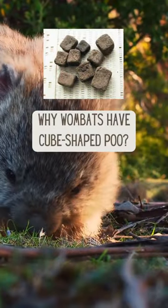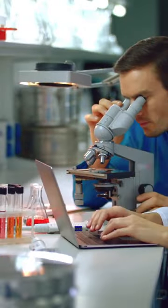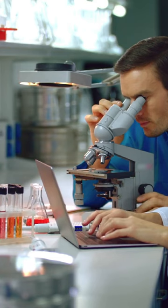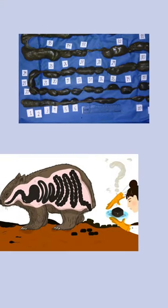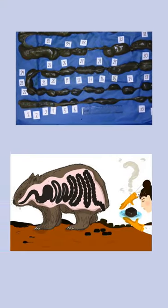Why do wombats have cube-shaped poo? Researchers have built on their IG Nobel Prize-winning research into this matter. Their surprisingly long and intermittently stretchy intestines compress their stool into cubes.